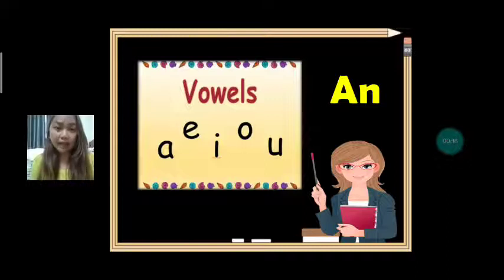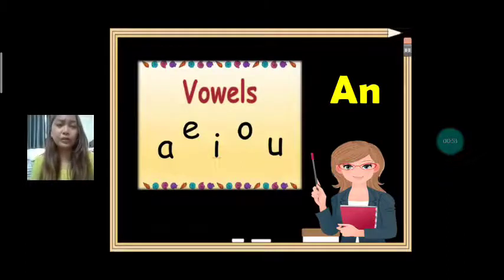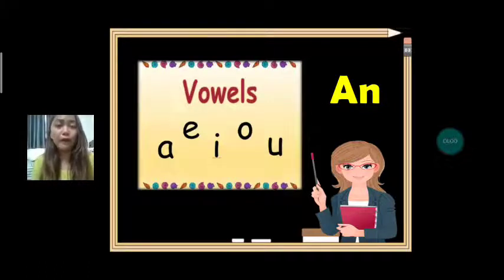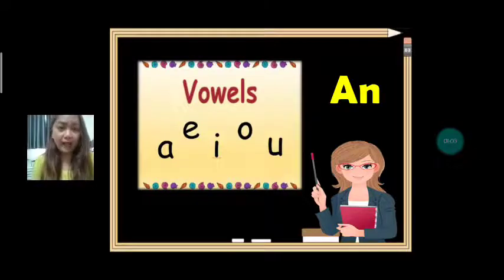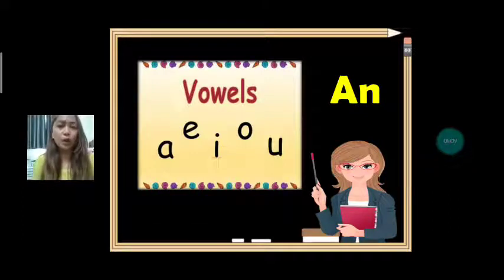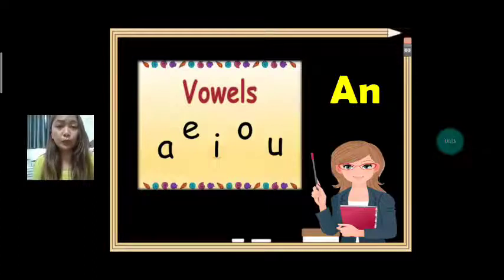How to use A and AN? For AN, we use AN if the vocabulary words start with vowel letters. What are the vowel letters? A-E-I-O-U. When the vocabulary word starts with these letters, we use AN.